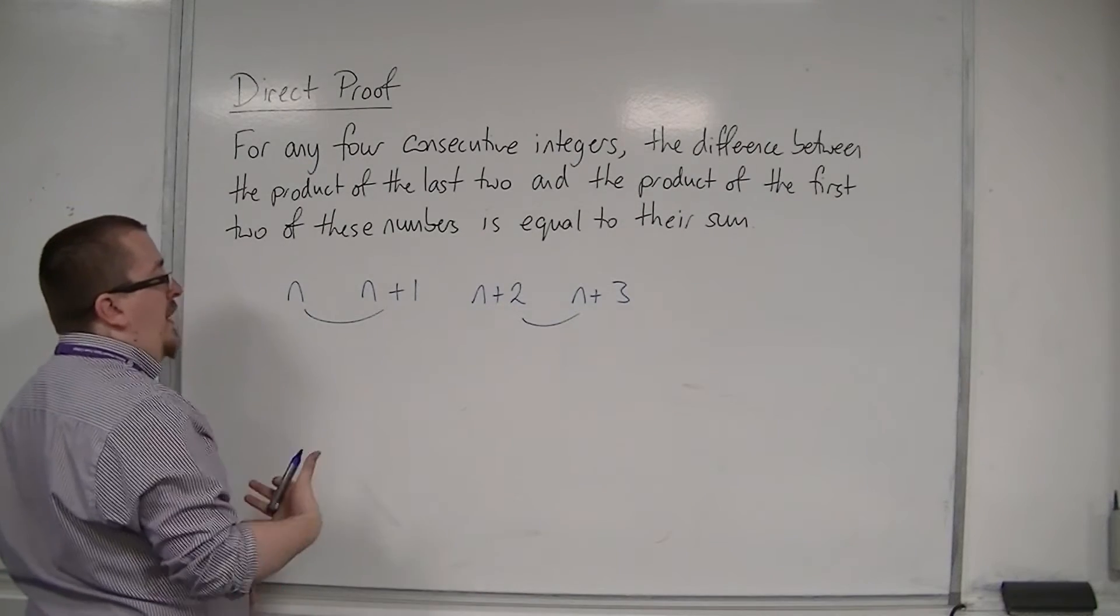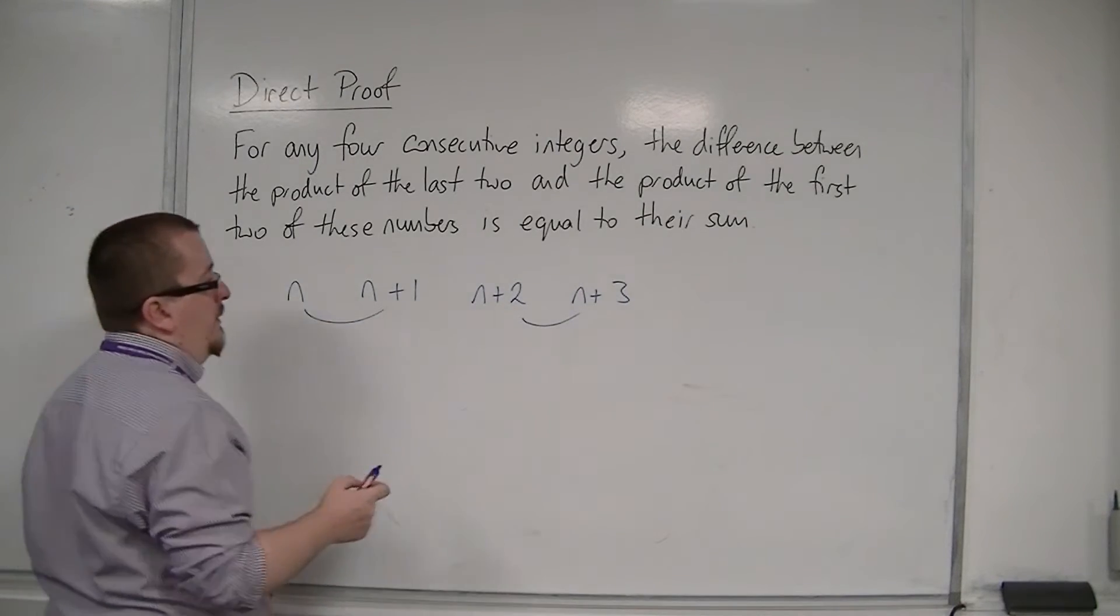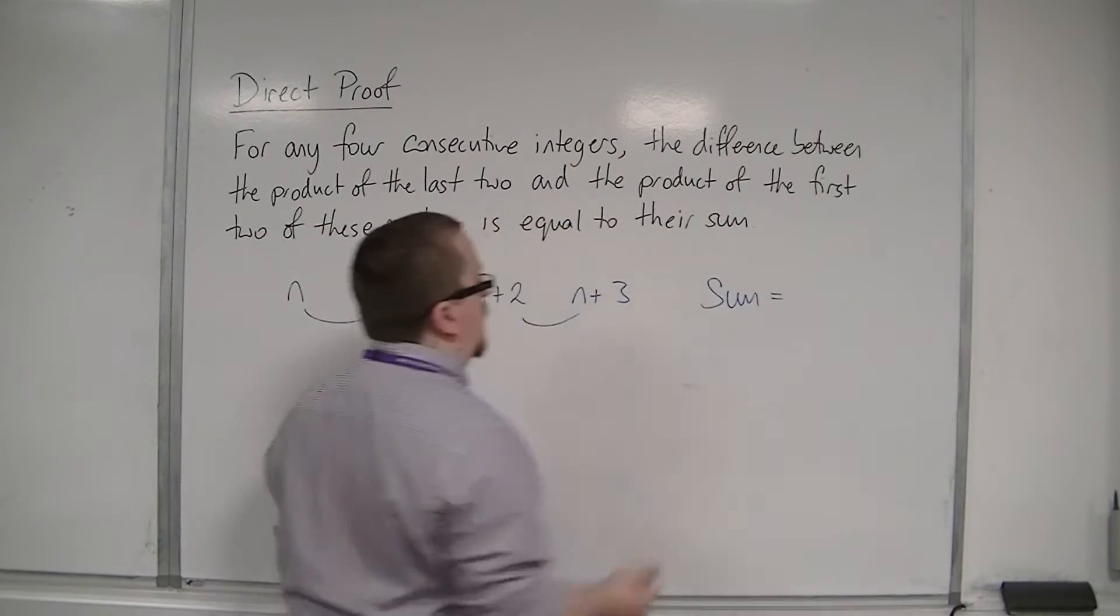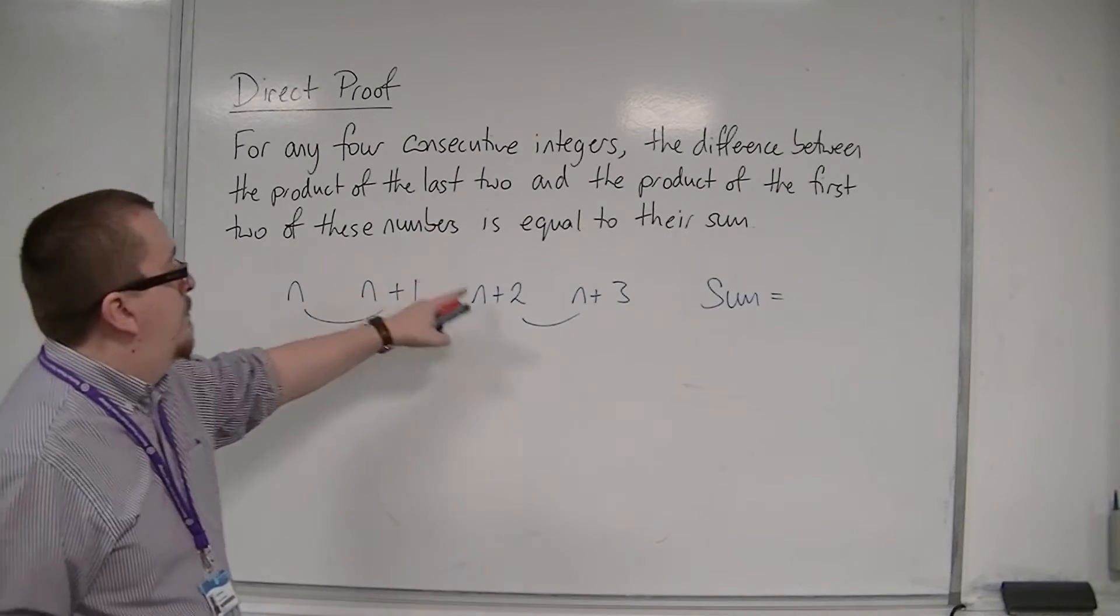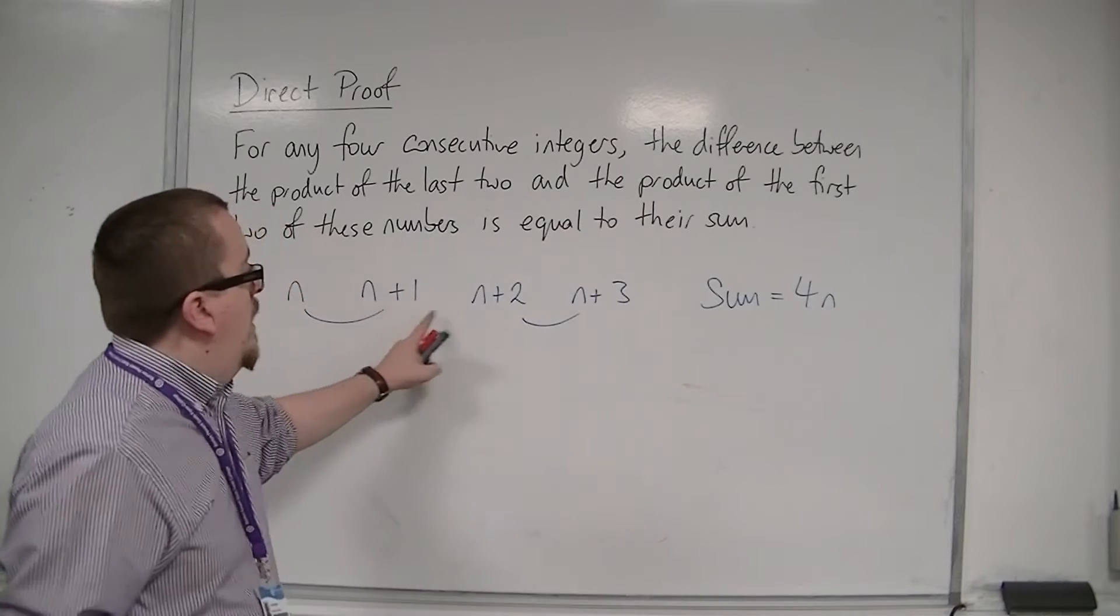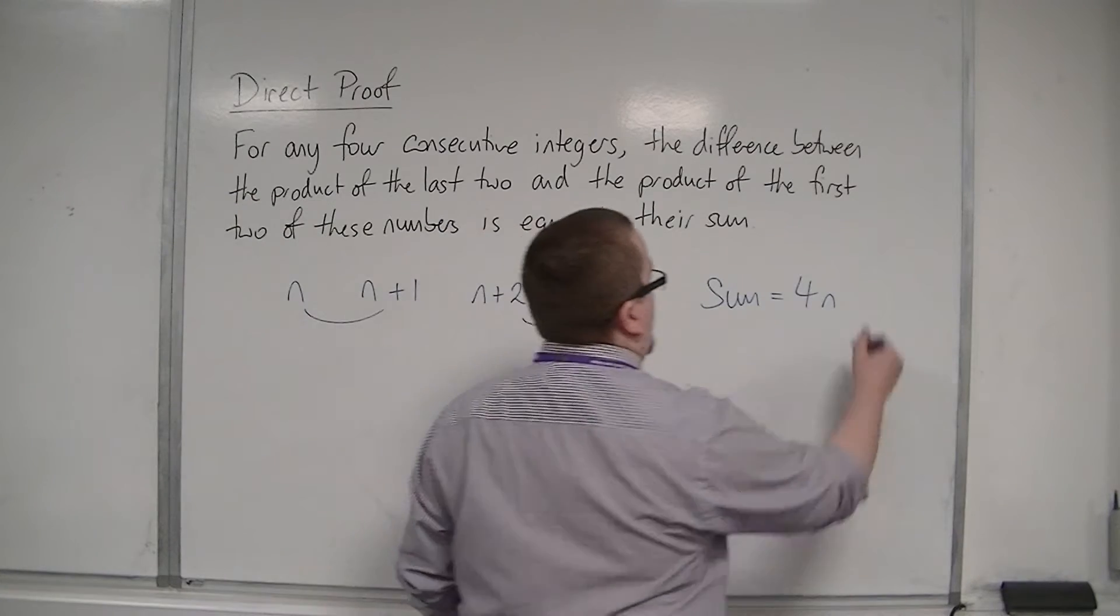So the sum of these four numbers is n plus n plus n plus n, so that's 4n, and then we've got 1 plus 2 plus 3, so that's 6.